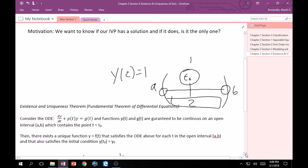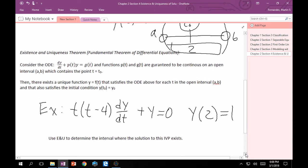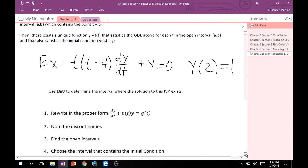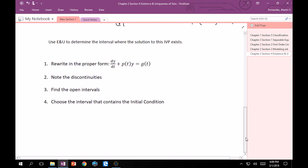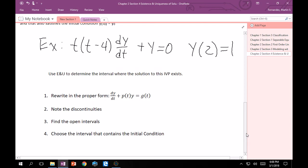So in order to see that, let's do a quick example. So, I'll just put this all onto the page. Look at this differential equation. It's t times (t minus 4) dy/dt plus y is equal to 0, and I tell you that at time equals 2, the ODE will be equal to 1. The question is, use existence and uniqueness to determine the interval where the solution of this IVP exists.